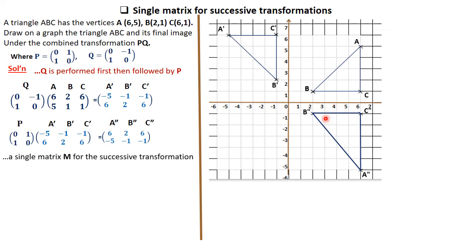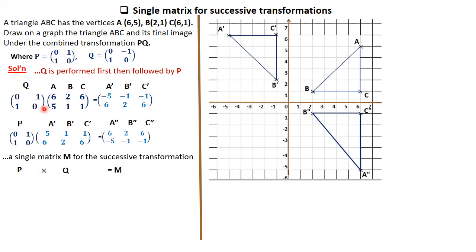As we continue, there is a matrix M which represents the successive transformation of P and Q, and that matrix can be arrived at as follows. We first multiply P times Q in that order — the order they were performed — and we say that matrix P times matrix Q gives us matrix M, where M is a single matrix for the successive transformation. M must be multiplied in that particular order, and I need to emphasize that.